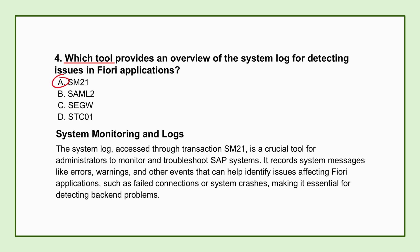SM21 is your direct route into the SAP system log. It records a wide range of system events: ABAP dumps, database errors, network communication problems, OS-level messages, and significant system warnings. If a Fiori app is misbehaving — data isn't loading, a button click leads to an error, or it's running slow — SM21 is often a key place to look for related back-end problems. The Fiori app might just be showing the symptom, but the root cause is logged here.